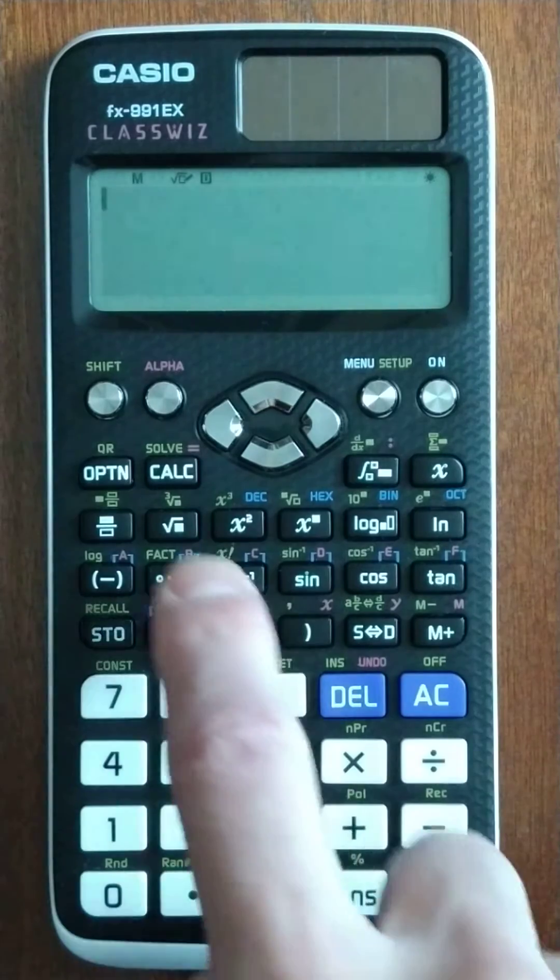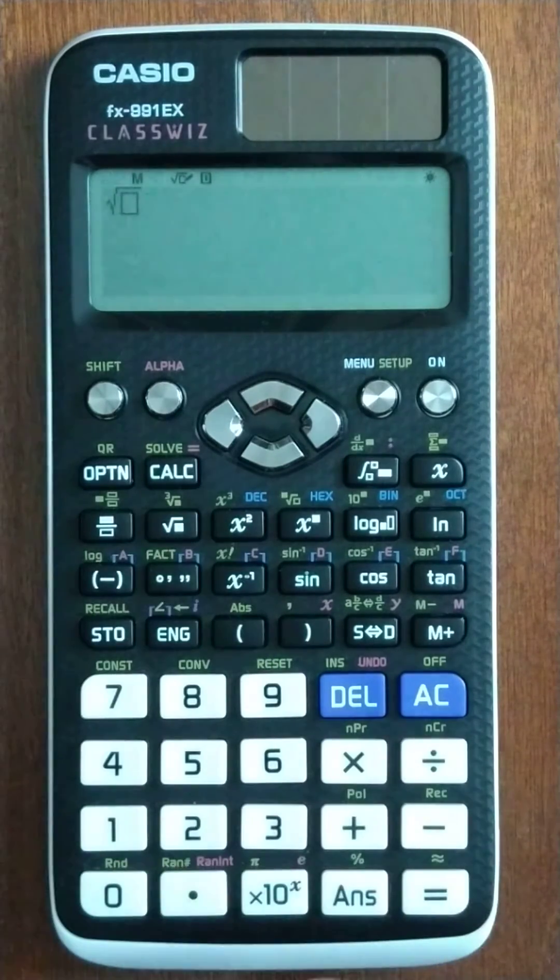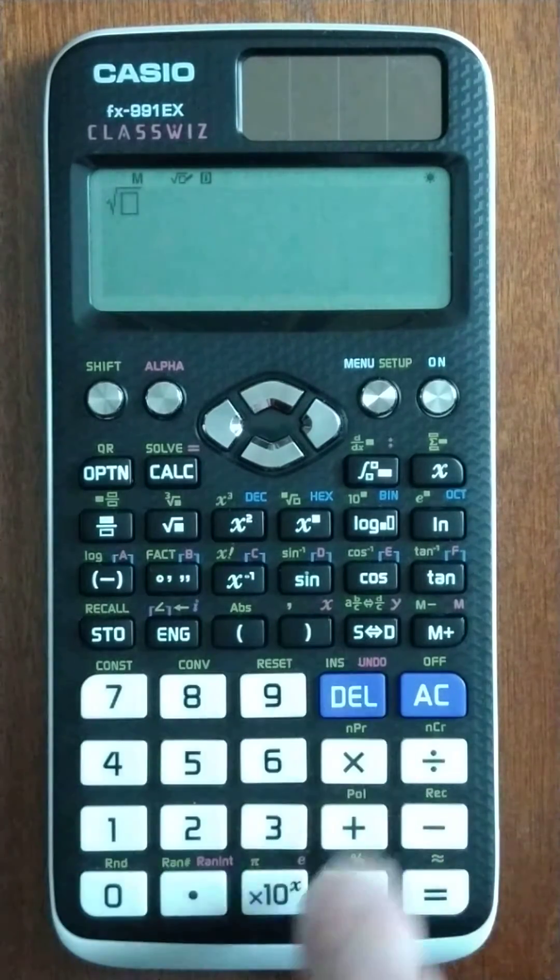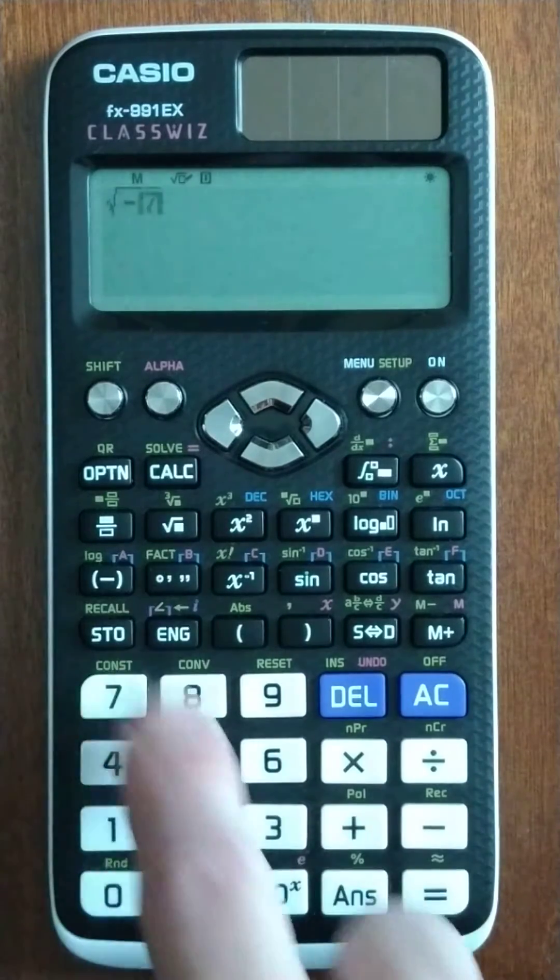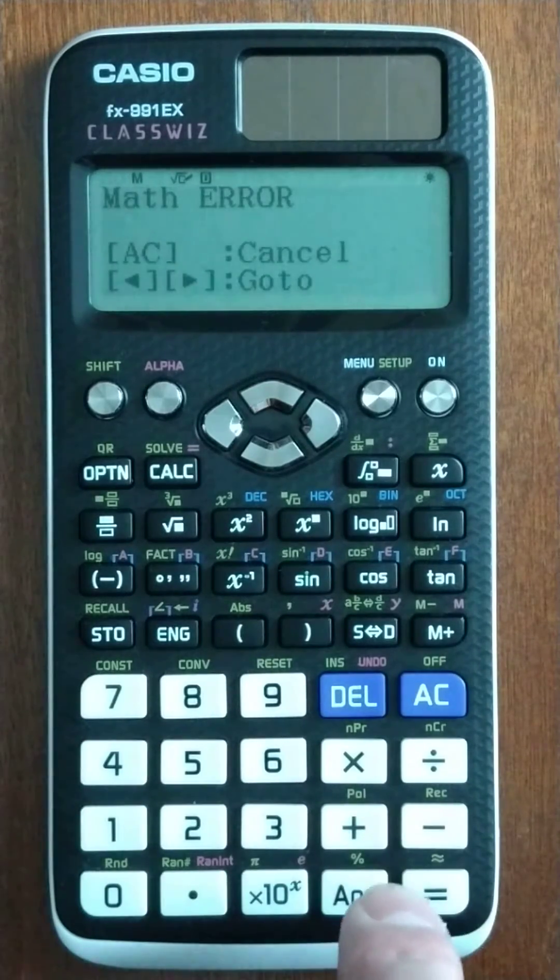So on the Casio, what's nice, no shift, just hit the square root button. Actually I'll show you the problem though. Negative 72 is going to say, oh, math error.